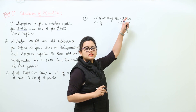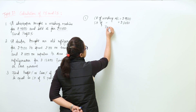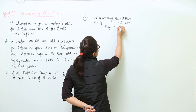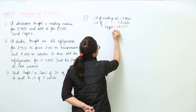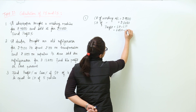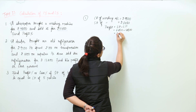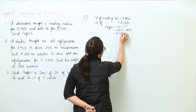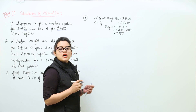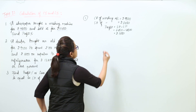Because the selling price is greater than the cost price, we have a profit. The profit equals selling price minus cost price, that is 6480 minus 4800, which gives us a profit of rupees 1680.